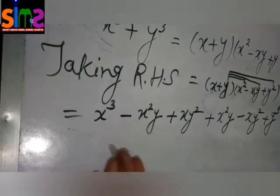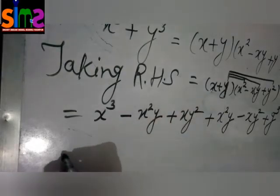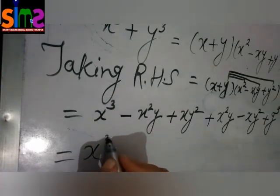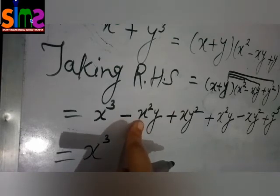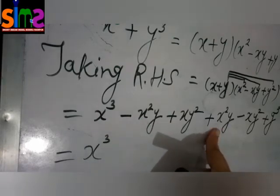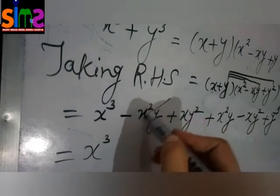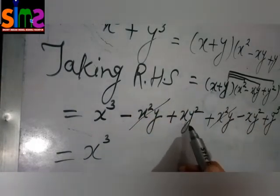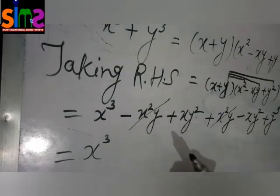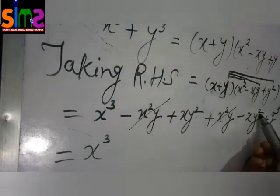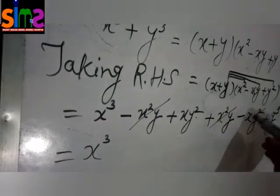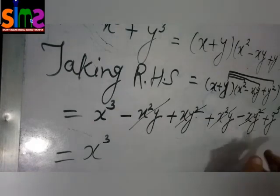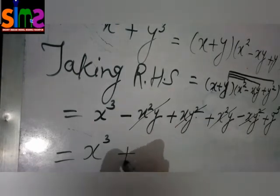Now what are you observing from this line? x cube. We will write down x cube here. This is minus x square y. And this is positive x square y. We can cancel them. Here is xy square positive. And here is xy square negative. So these can also be cancelled. y cube is the rest of parts. So we will write down y cube as it is.